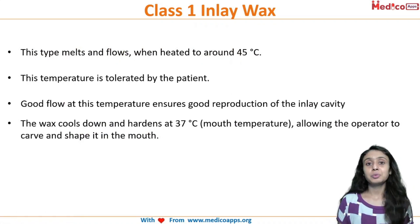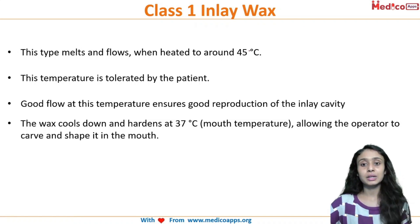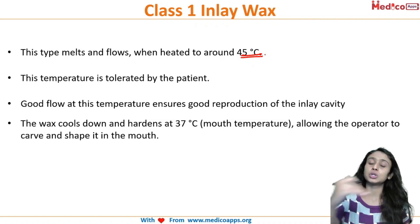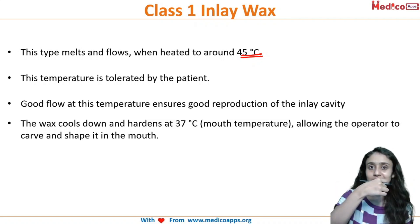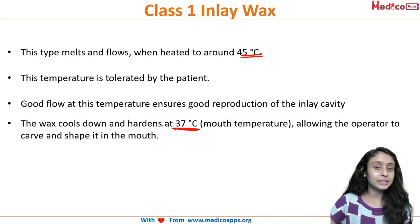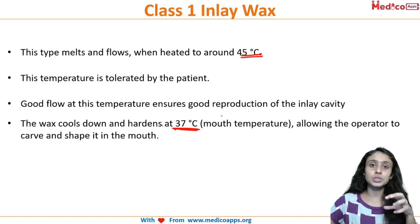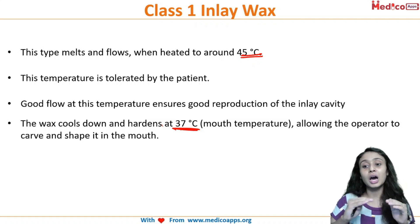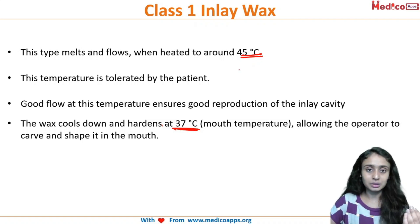Class one, as mentioned earlier, is used directly in the mouth. This type of wax tends to melt easily around 45 degrees Celsius, a temperature tolerated by the patient. Once you prepare the cavity, you melt this wax, place it in the mouth, and it cools and hardens at 37 degrees Celsius — the oral cavity temperature. Once it hardens, the dentist then carries out carving and shaping inside the oral cavity.